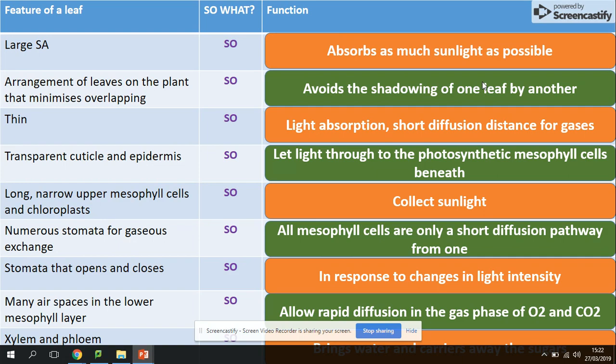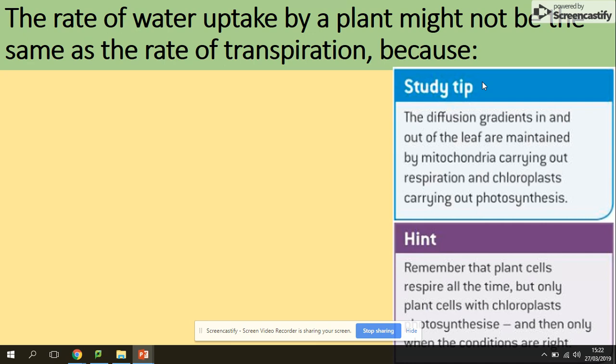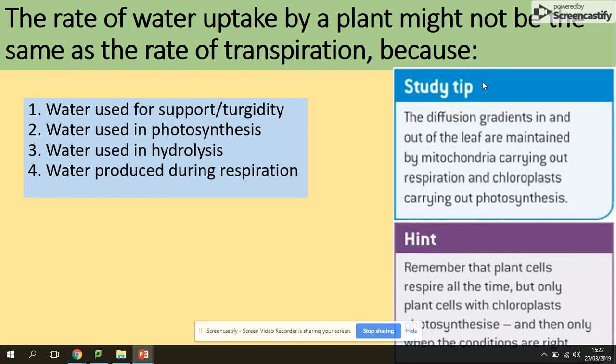The rate of water uptake by a plant might not be the same as the rate of transpiration. Why is this the case? Well, because water is used for support - remember, the plant cell wall is made of cellulose, they've got massive vacuoles. This is to do with water. Water used in photosynthesis - where is this coming from? Of course, the substrates needed for photosynthesis are carbon dioxide and water. Water used in hydrolysis - remember, the action of hydrolysis is the addition of water to break the bonds, to hydrolyze molecules. And water is produced in respiration, so the product of respiration is water and carbon dioxide.